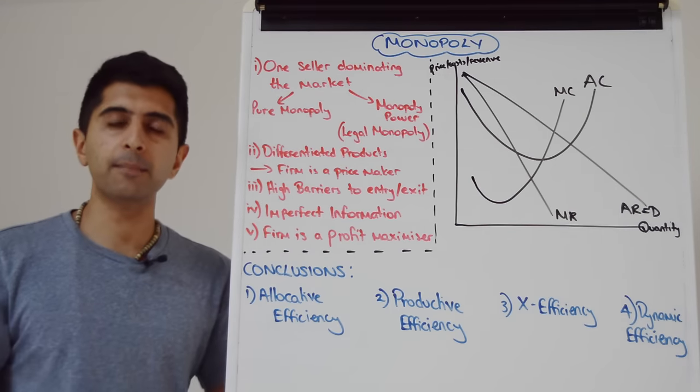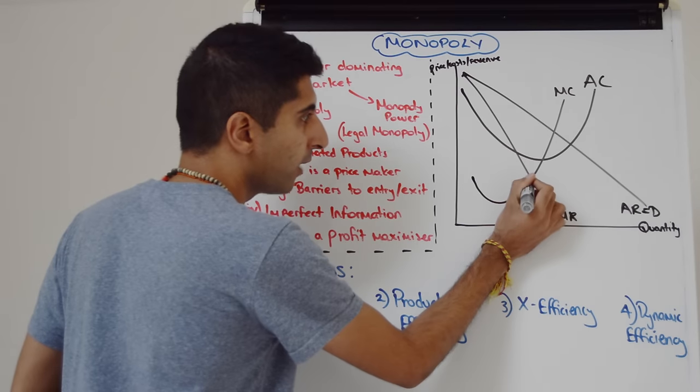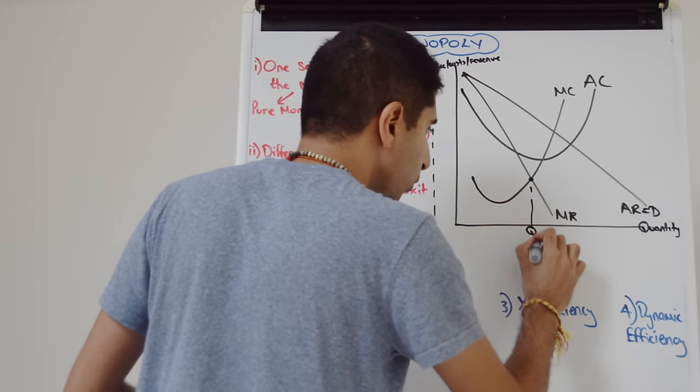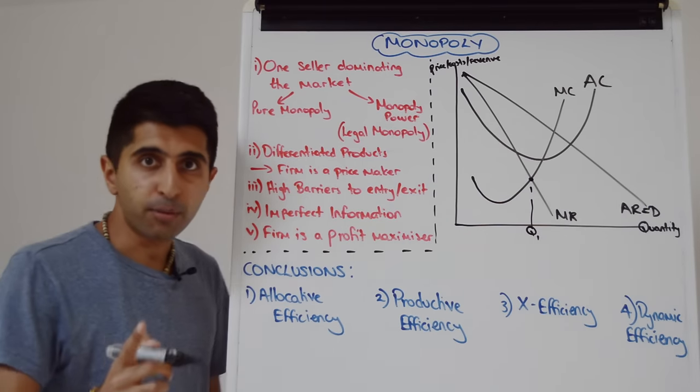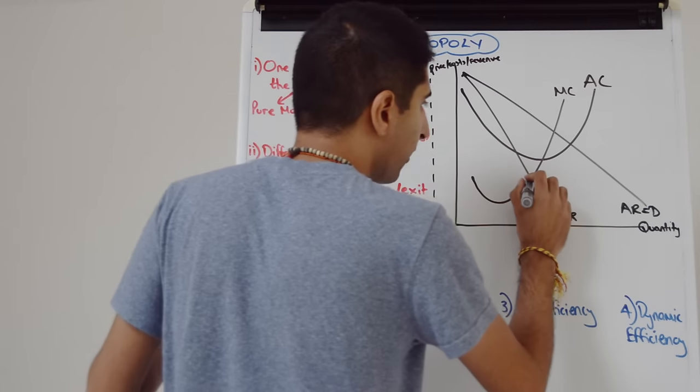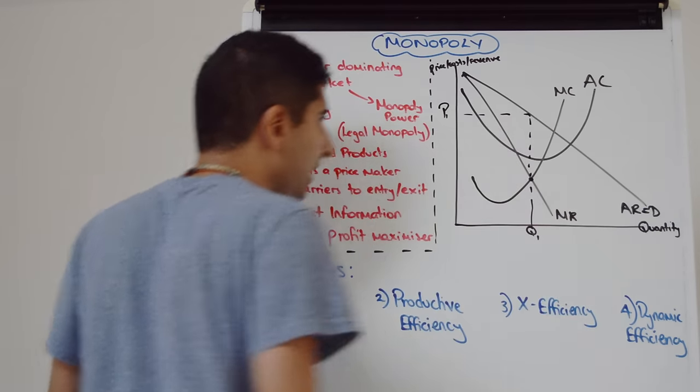Remember, this firm is a profit maximizer. So they're going to produce where marginal cost equals marginal revenue, and that takes us to that point here. So let's call that point Q1. Where do we read the price from? We read the price from the AR curve. The AR curve is the price. We have to go up to AR, and that will give us a price of P1.